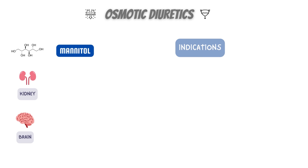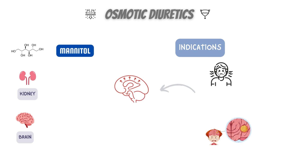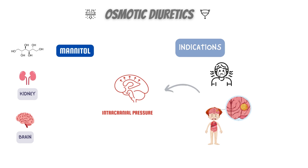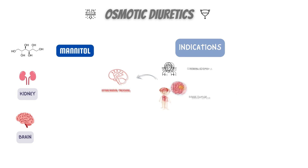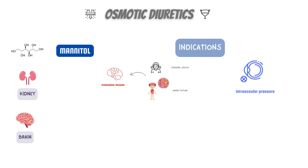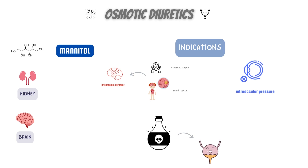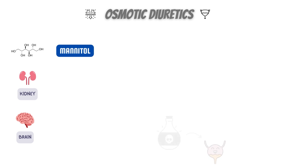Here are a few indications to use this drug. The primary indications for the use of manitol include increased intracranial pressure due to cerebral edema and brain masses, increased intraocular pressure associated with acute glaucoma, and it can also be used to induce diuresis and facilitate the excretion of harmful compounds and/or metabolites.